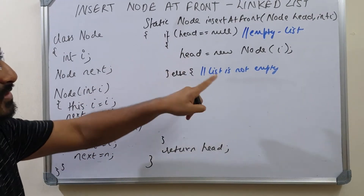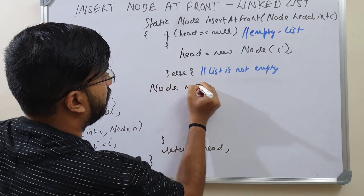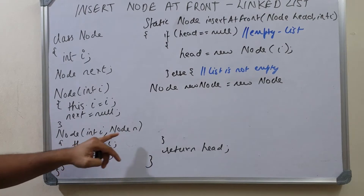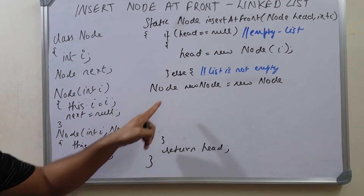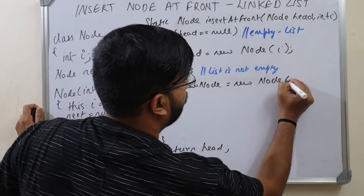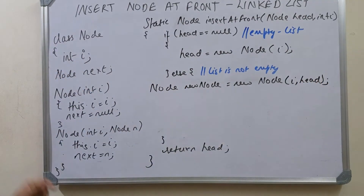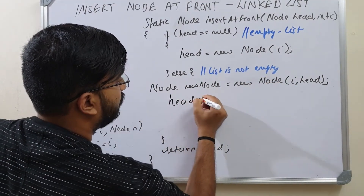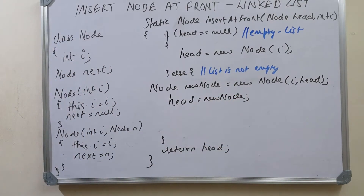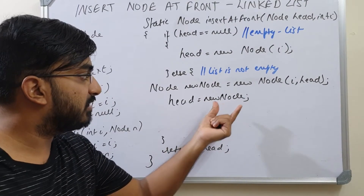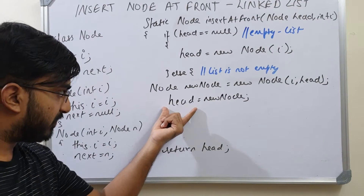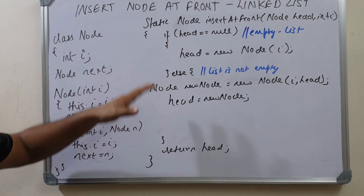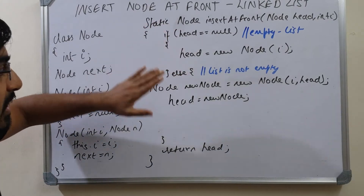In the case head is not null — that is the list is not empty — node newNode equals new node using the constructor that takes i and the current head, because this node has to be placed before the current head. So this new node's next is pointing to head. Then head equals newNode, since this new node is the new head. With object assignment, the reference gets copied. Finally we return the head, handling both the null and non-null cases.